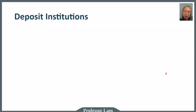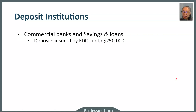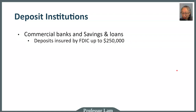A bank is oftentimes included in its name. There are different types of deposit institutions. The name deposit institution means that they can accept deposits from customers. The most common ones are commercial banks or savings and loans. These banks and savings and loans are insured by FDIC — the Federal Deposit Insurance Corporation — up to $250,000. So even if something happens to the bank, you are protected up to $250,000.